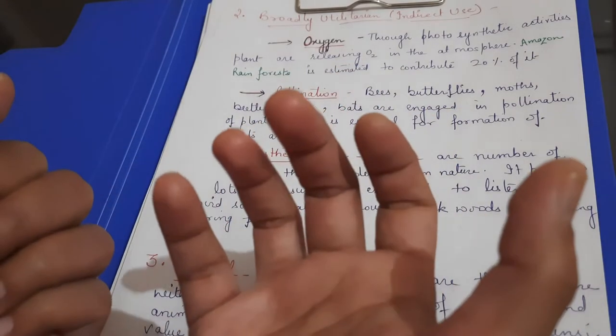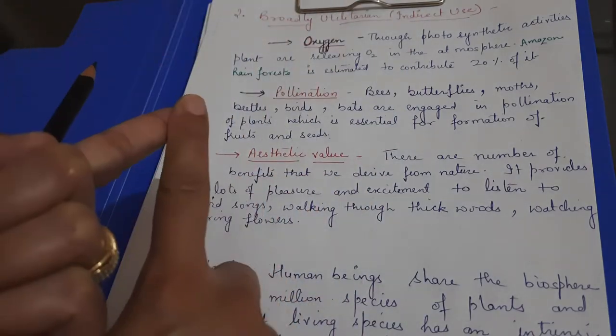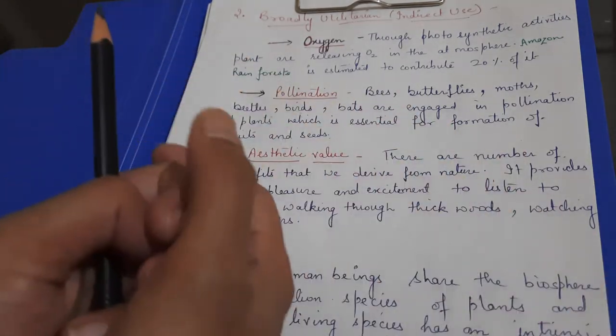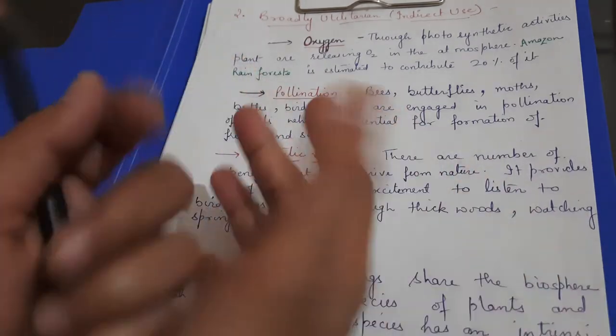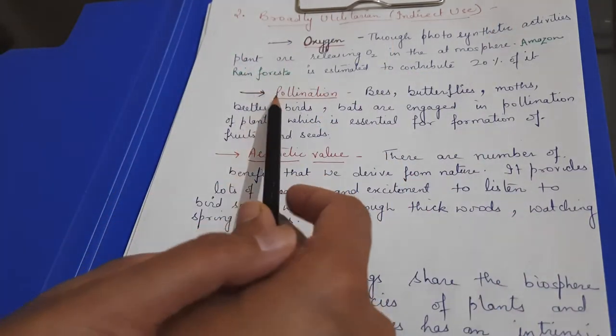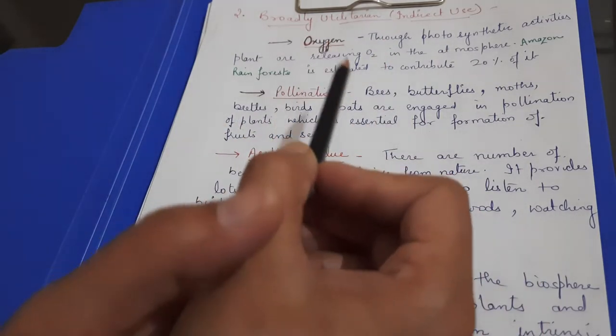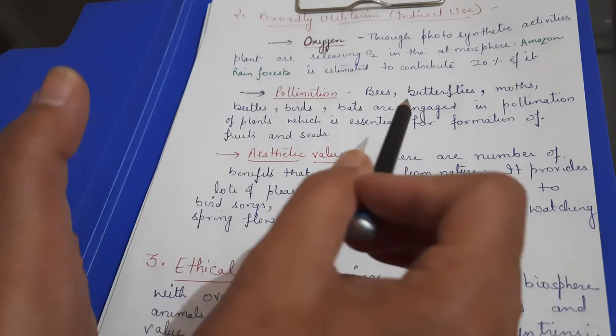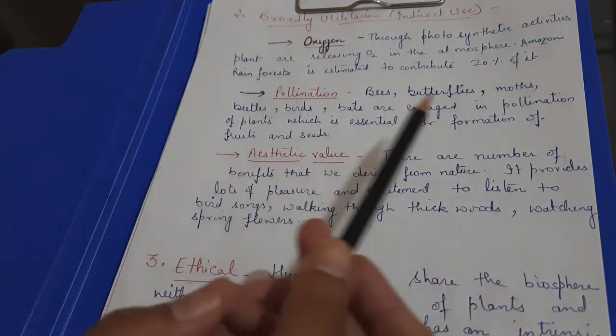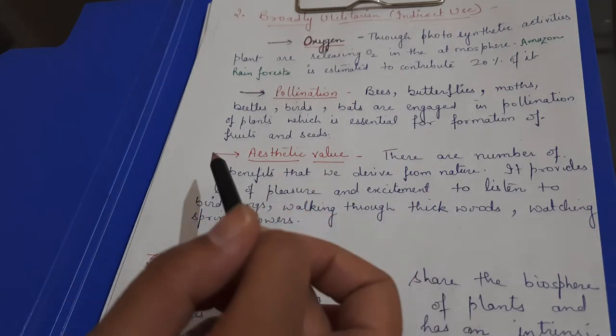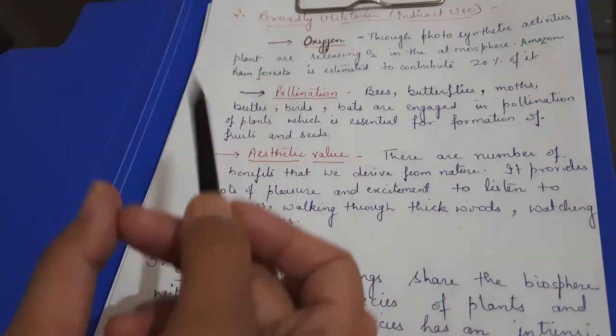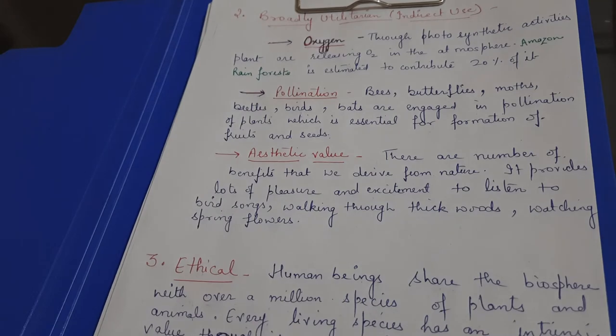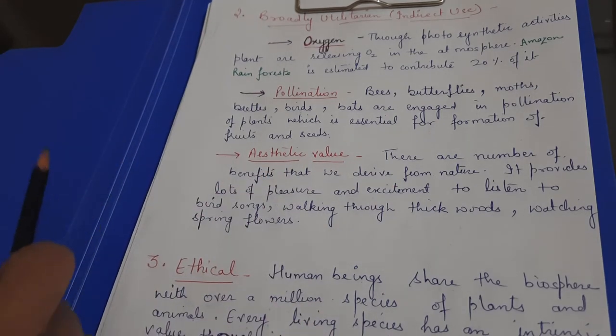Pollination will be pollinated from male reproductive organs to female so there will be fruits and seeds and plants will be produced with fruits. Pollination will be done by bees, butterflies, moths, beetles, birds, bats. If the insects will be destroyed, then pollination will not be done, then fruit seeds will not be made, then further plants will not develop. So this is the aesthetic value, number of benefits.